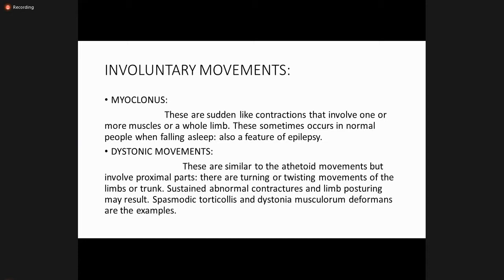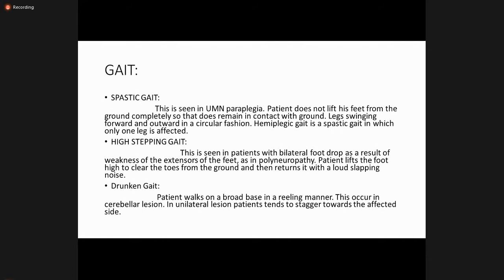Dystonic movements involve mostly the proximal muscles, while athetoid movements involve the distal parts of the limbs. Regarding gait: spastic gait is seen in upper motor neuron paraplegia — the patient does not lift the feet completely from the ground, and the leg swings forward and outward in a circular fashion. Hemiplegic gait is a spastic gait in which only one leg is affected. High-stepping gait is seen in patients with bilateral foot drop resulting from weakness of extension of the feet, as in polyneuropathy — the patient lifts the foot high to clear the toe from the ground and returns it with a loud slapping noise.